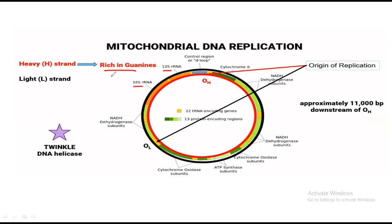There are two origins of replication: OH, the origin of replication of the heavy chain, and OL, the origin of replication of the light chain. Keep in mind that replication of the heavy chain starts first, and only when it is completed or near completion does replication of the light chain begin.